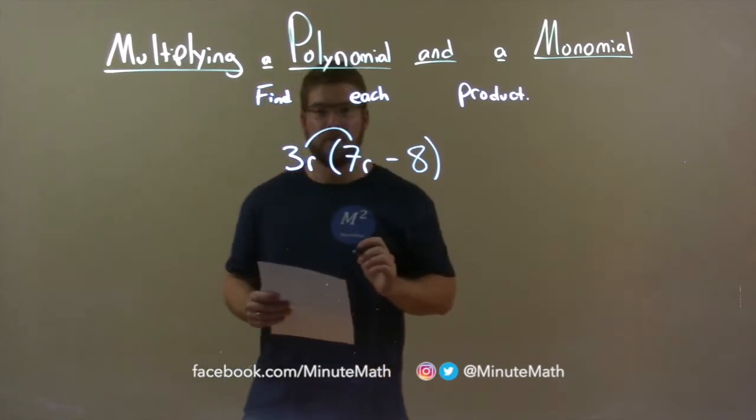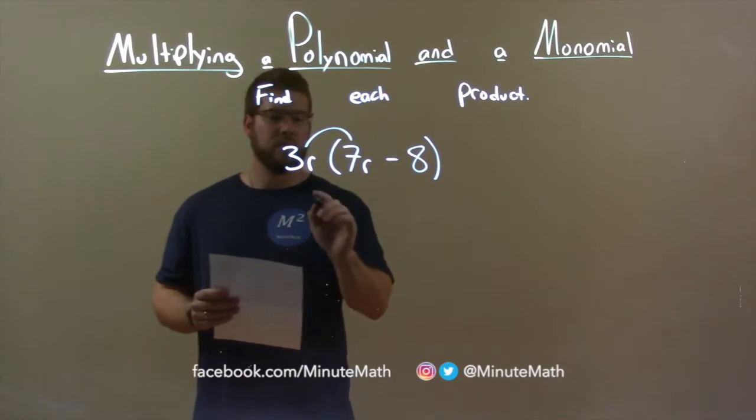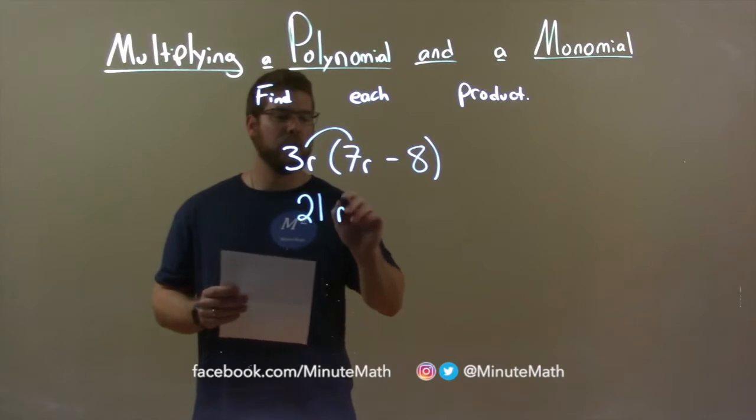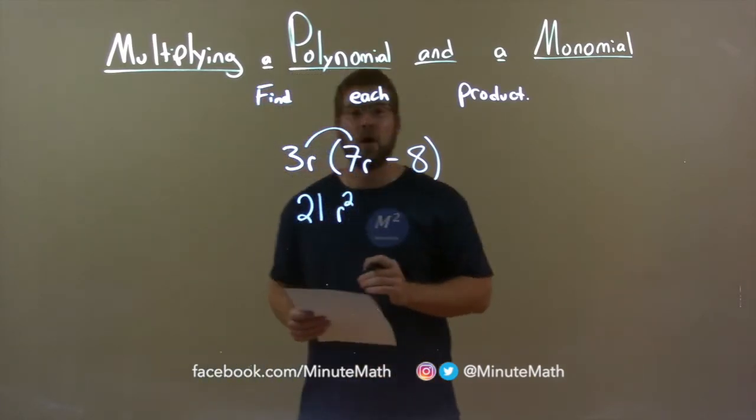3R times 7R, well, let's look at the coefficients. 3 times 7 is 21, and R times R, now the variables, is an R-squared. So we have 21R-squared here.